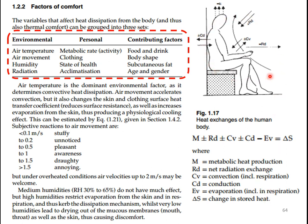There are many variables contributing to comfort factors. Environmental factors are more objective: air temperature measured in degrees Celsius, air movement in meters per second, humidity in percentage, and radiation in watts per meter squared. Personal factors include metabolic rate, measurable by activity type, and clothing level. State of health and acclimatization cannot be measured but depend on physiological and psychological feeling — making them more subjective.